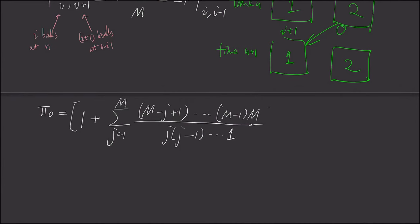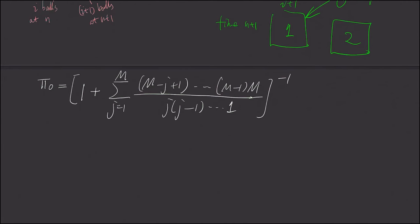And by close inspection, we can see that the denominator is nothing but j factorial. And the top, right here, it is nothing but m factorial divided by m minus j factorial. Because right here, the first factor starts from m minus j plus one.